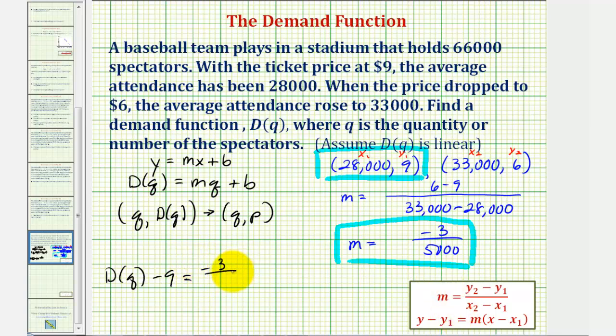which is negative 3 divided by 5,000 times the quantity x minus x₁, or in our case, q minus 28,000. Now, let's solve this for D(q) on the next slide.